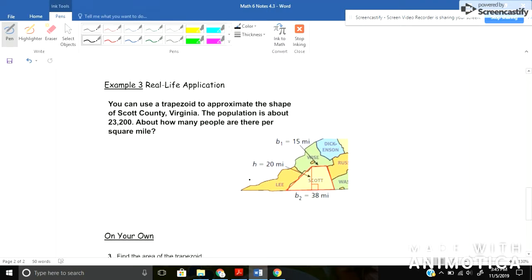For example three, our real life example says you can use a trapezoid to approximate the shape of Scott County Virginia. Population is about twenty three thousand two hundred, but how many people are there per square mile? Okay, so what we need to do first then would be to find the area of Scott County, and then we can take that divided by our population, divided by how many miles we have, to figure out how many people per square mile there are.